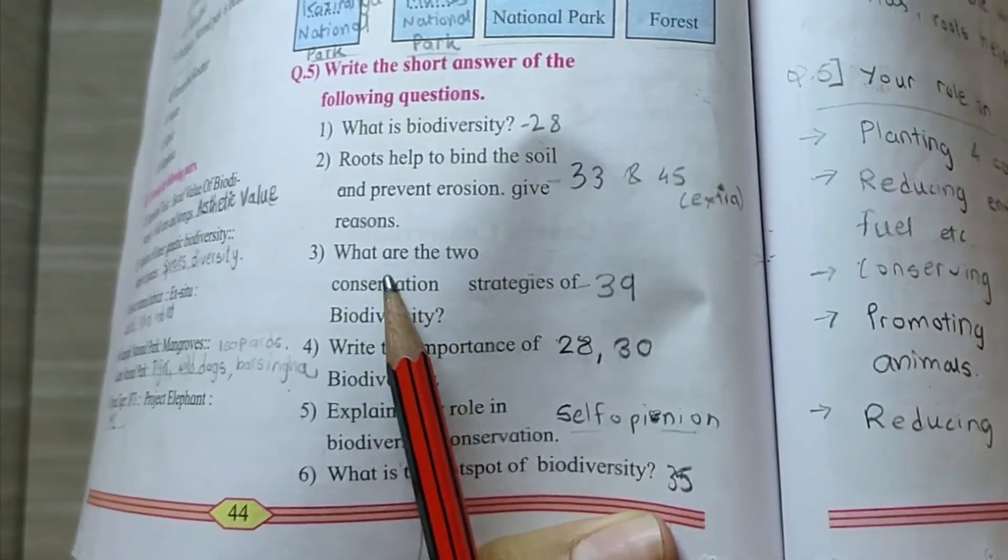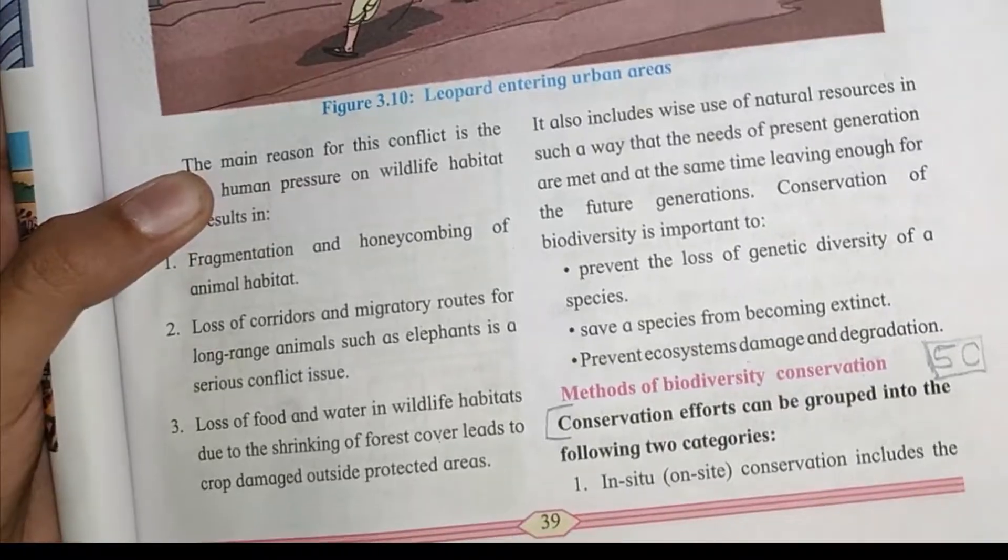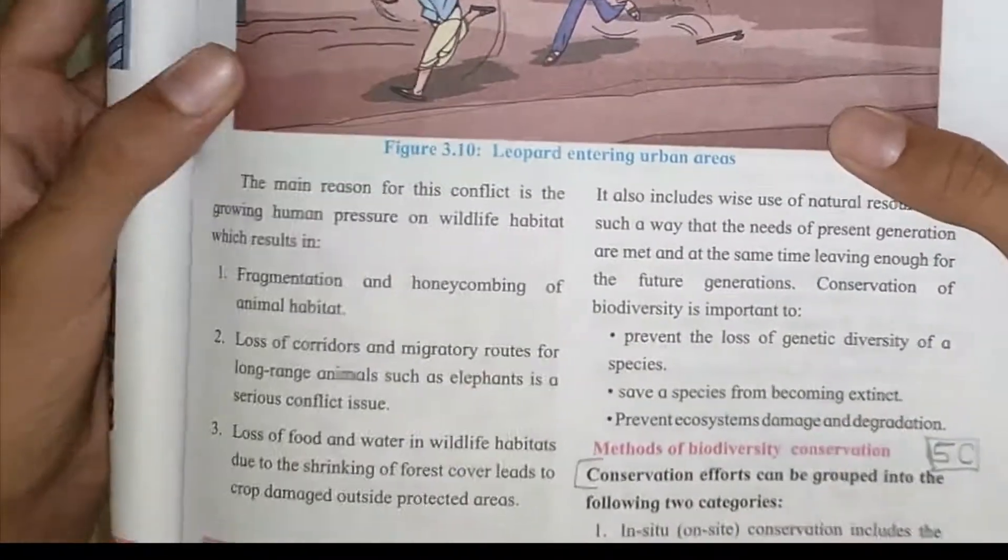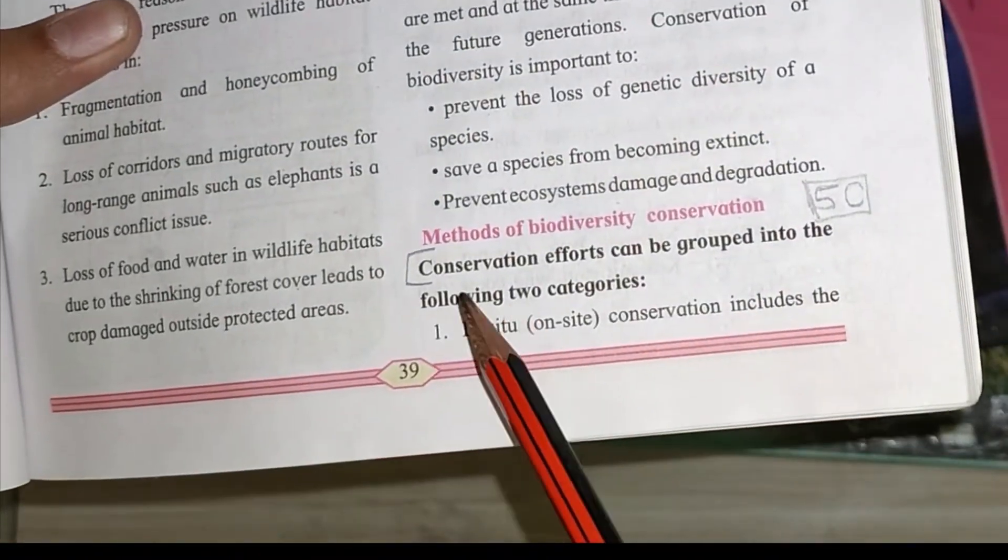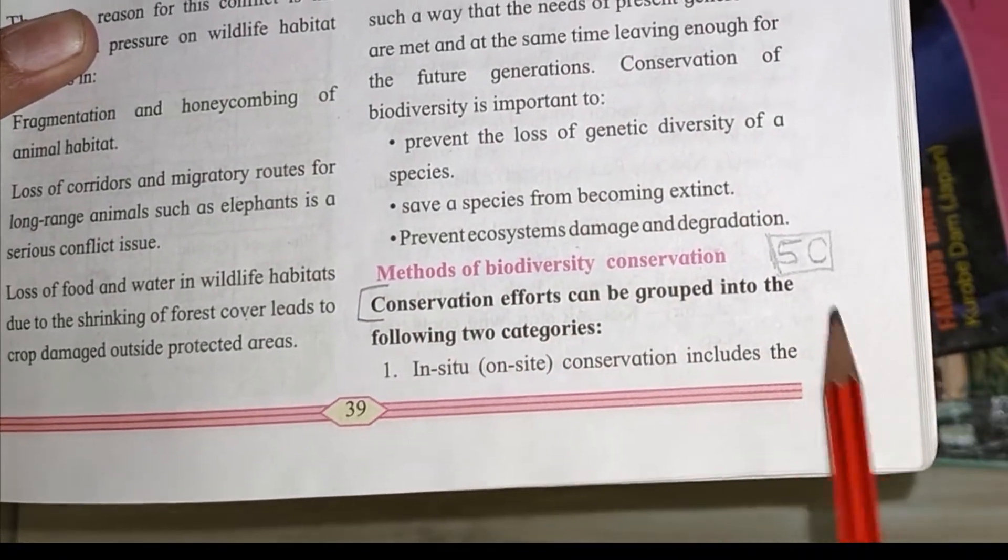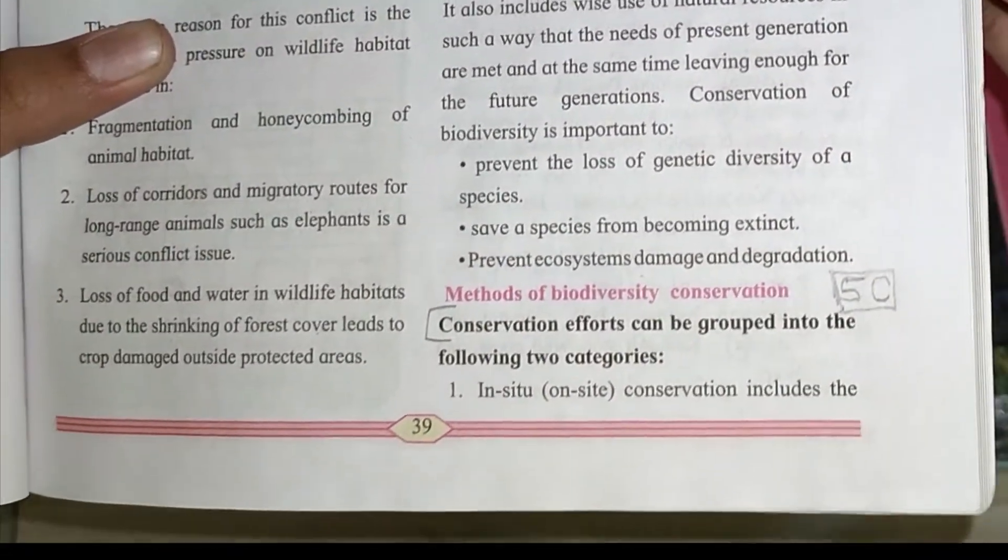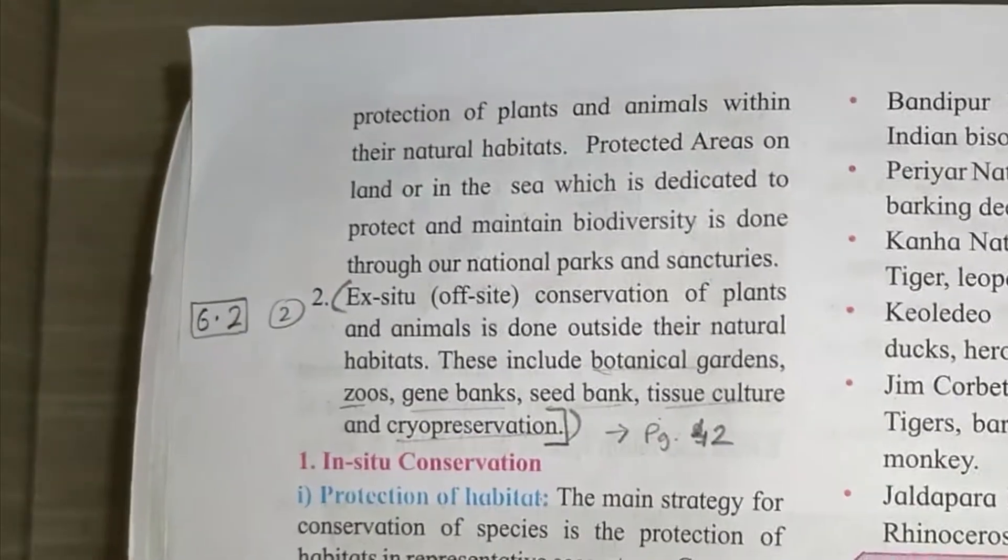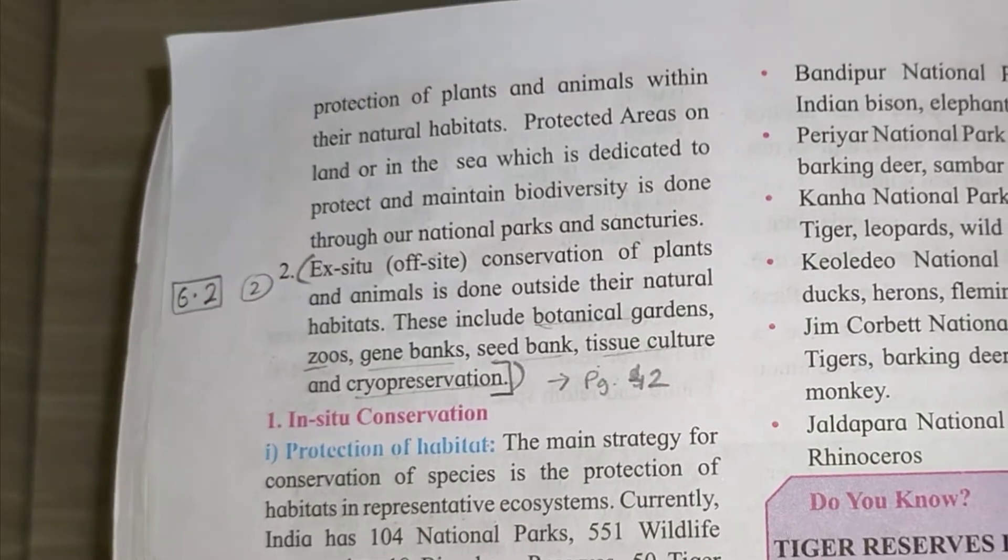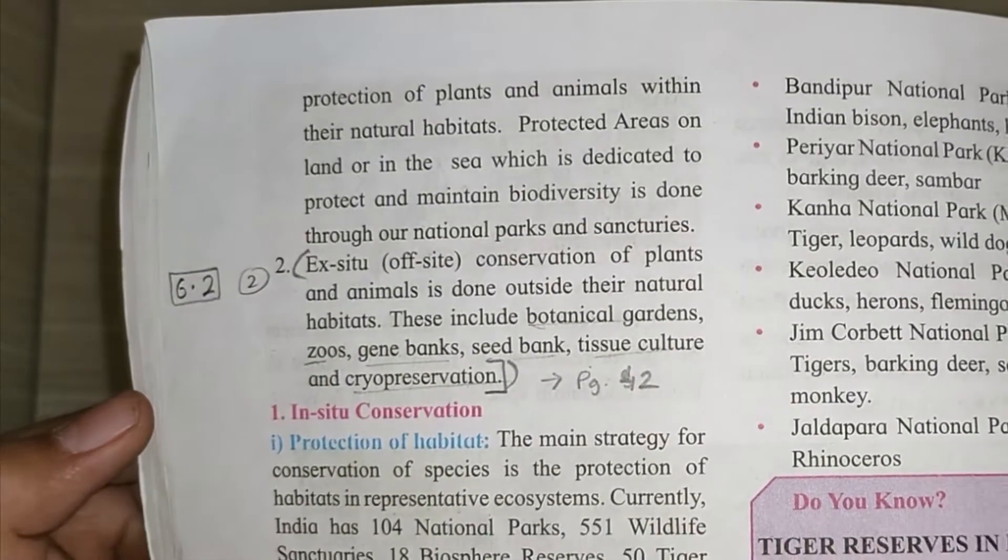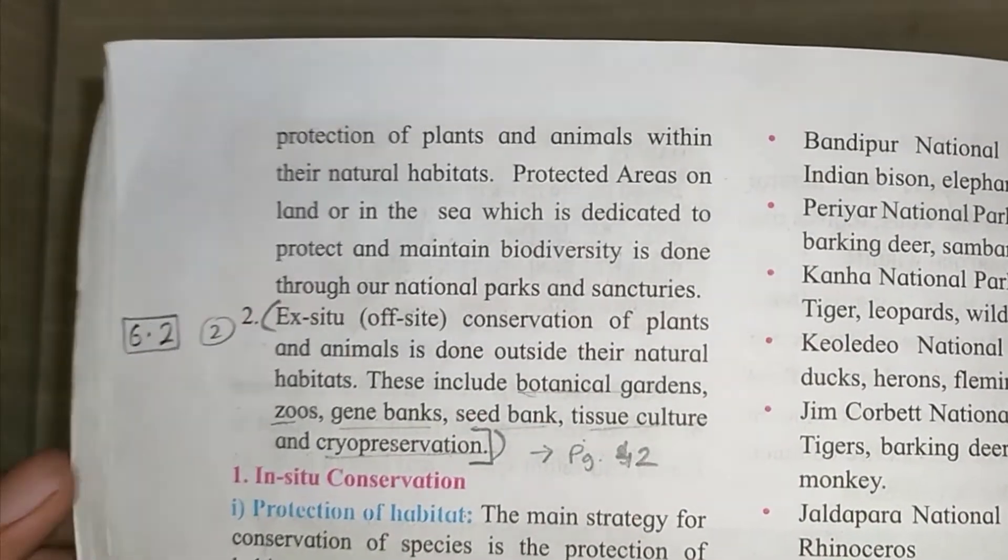Third question, what are the two conservation strategies of biodiversity. It is on page number 39. You can see the answer is given here from conservation efforts can be grouped into following two categories, these are the, first in situ, till second page, page 40, till cryopreservation.